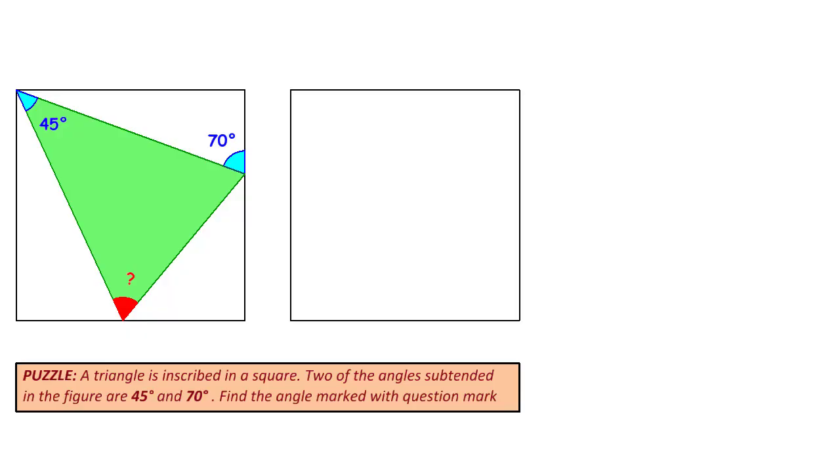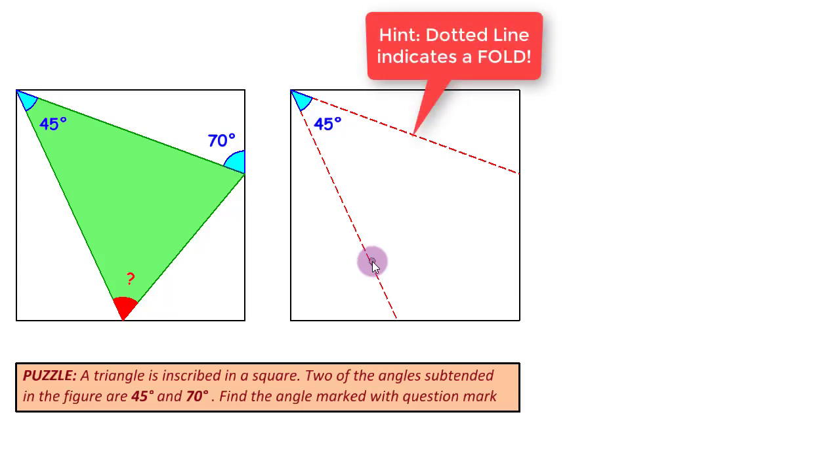We will start with the basic square that is given to us and I will draw just the two lines that are given and the angle between them. I have deliberately drawn these lines dotted because that is a hint. As children, when we were doing handicraft, dotted line meant folding.